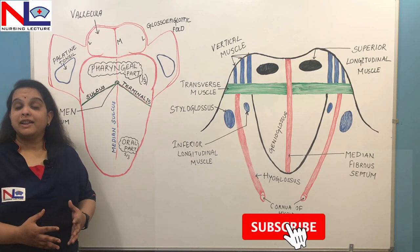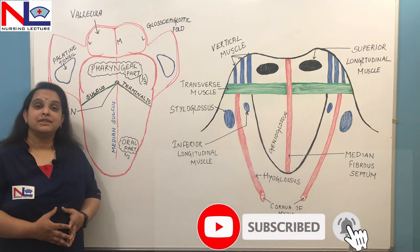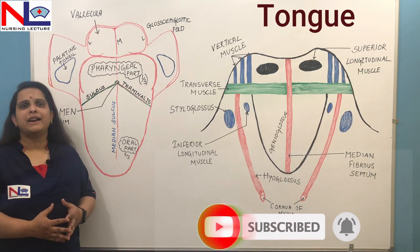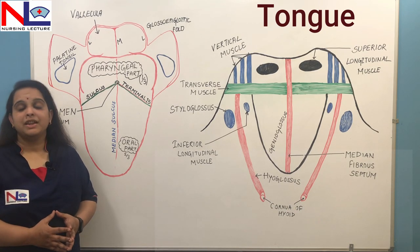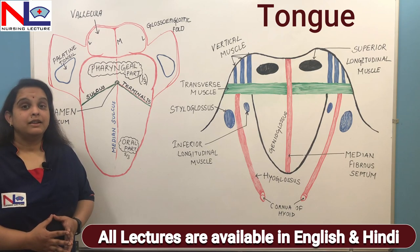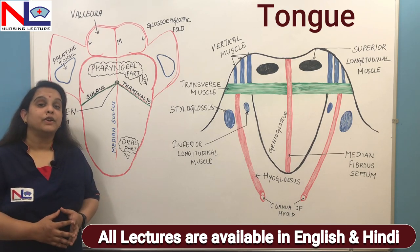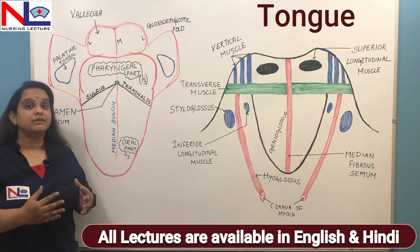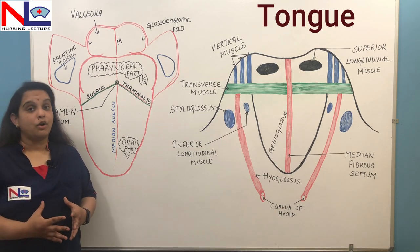Hello everyone. Today in this lecture, I'm going to discuss about the structure of tongue. We know that this is the accessory organ of the digestive system, and it also forms one of the sensory organs in our body, which is mainly responsible for the taste of food.